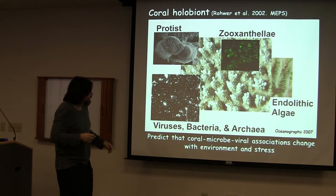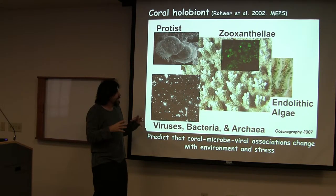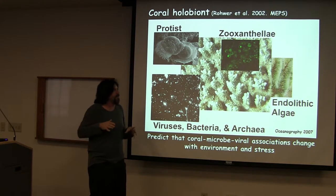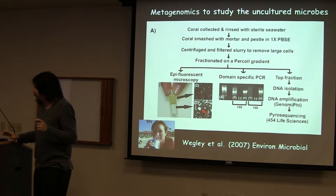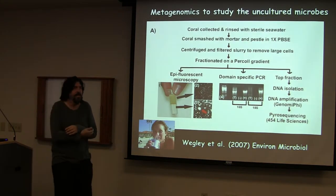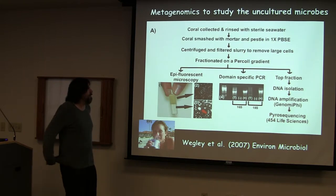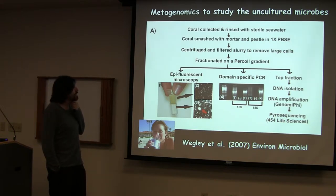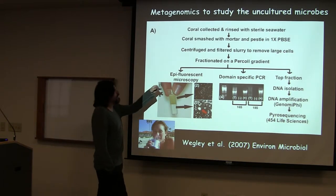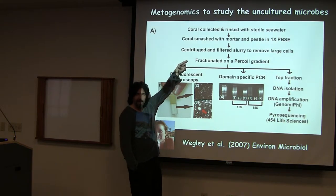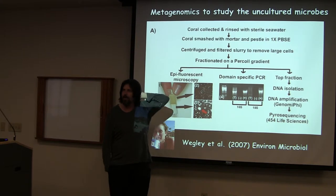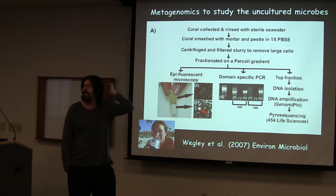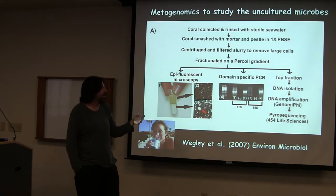The idea is that this association is going to change with environment and with stressors. Linda did really the first real version of this to get us past the 16S. She took a technique worked out by Delon's lab to look at sponges — he had gotten prokaryotes out of sponges using a percoll gradient separation.